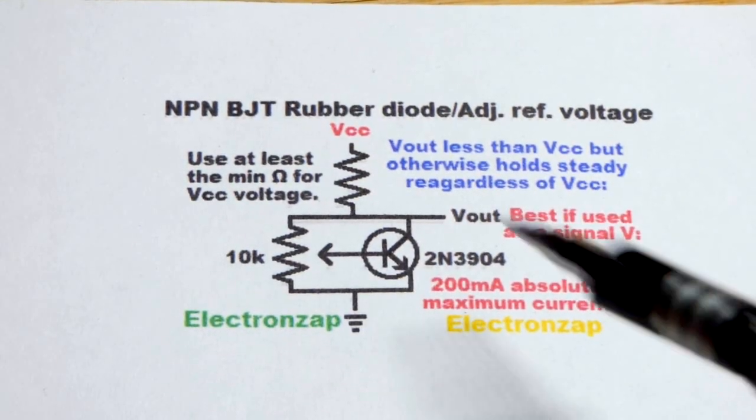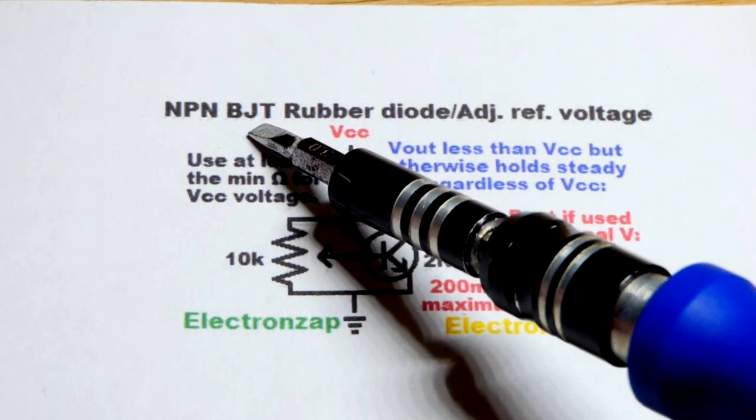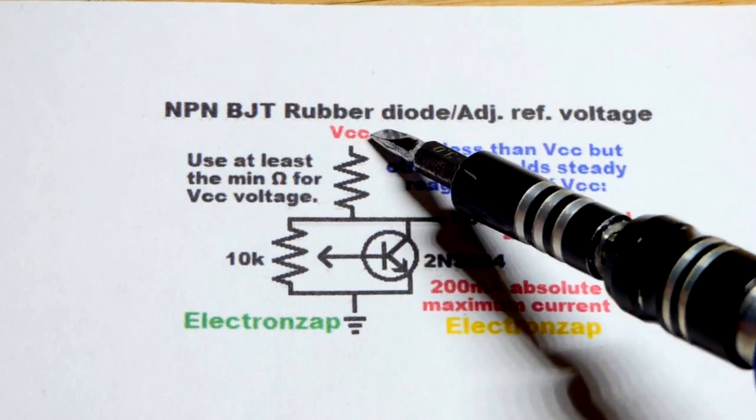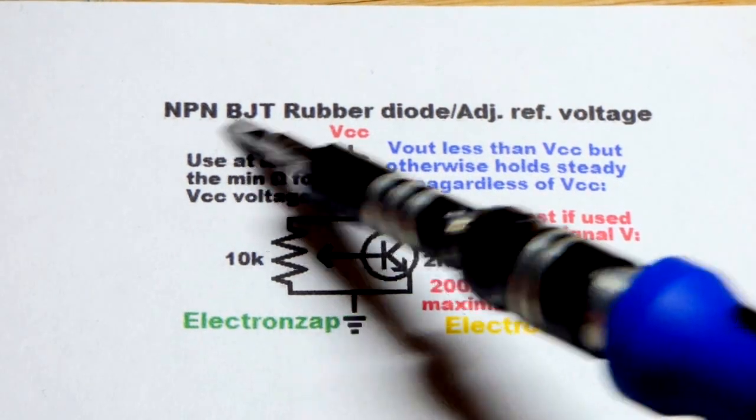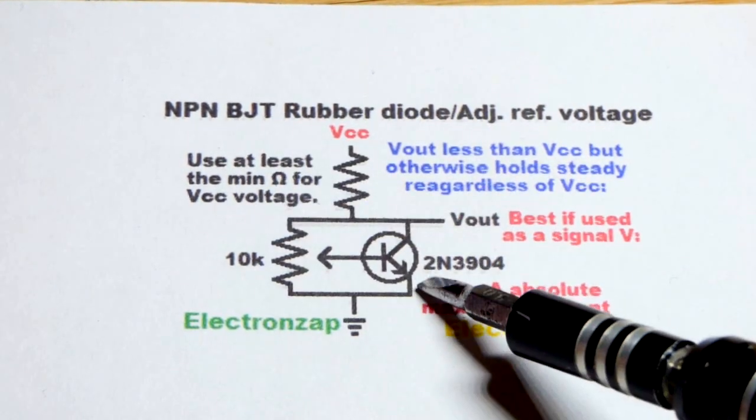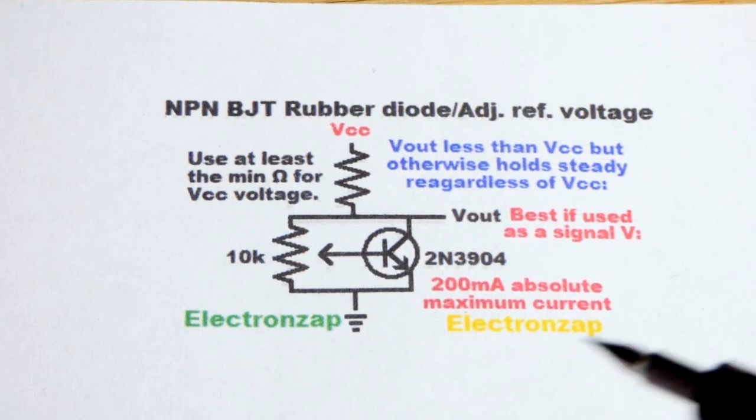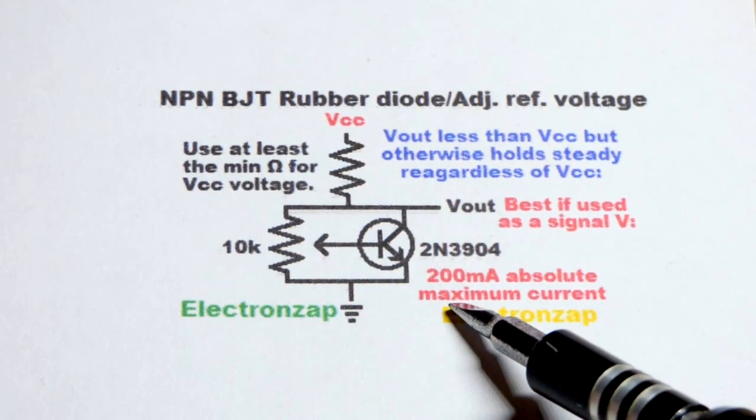Now in this video we're going to look at one of my favorite circuit fragments here, a rubber diode. We're going to use an NPN bipolar junction transistor, the 2N3904, and one thing to know about the 2N3904, no matter what you're working with.